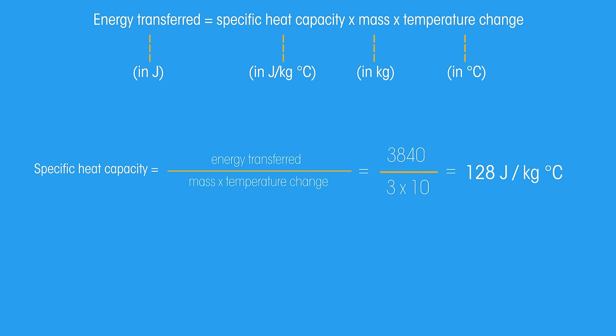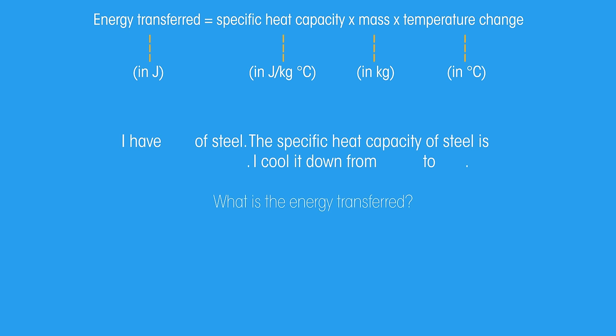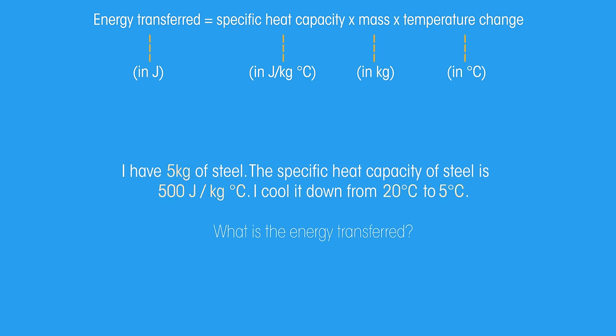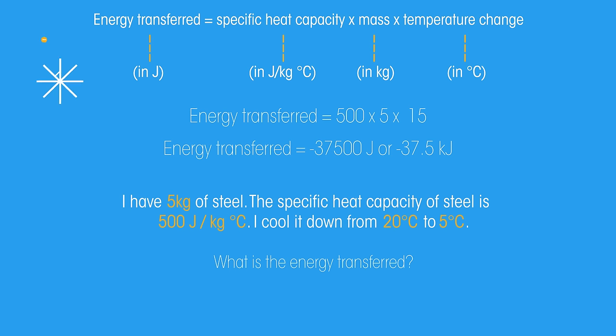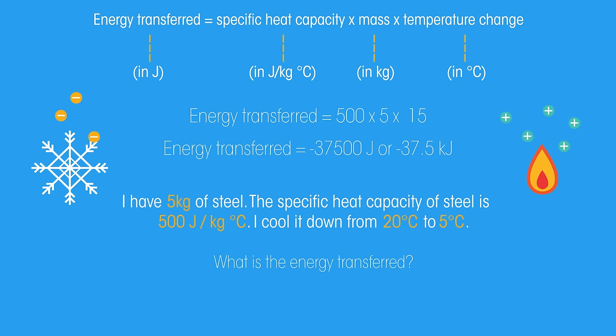Here is another practice problem. Pause the video and attempt to calculate the energy transferred to the lead. Did you get it right? We could divide by 1000 to turn the answer into kilojoules. Notice that the answer is negative this time because we cooled the lead. The temperature change will always be negative if it is being cooled and positive if it is being heated.